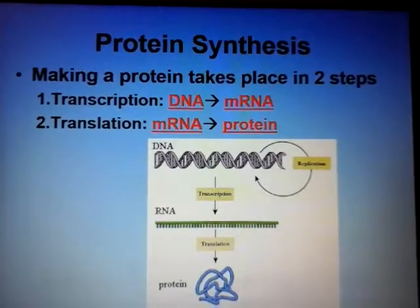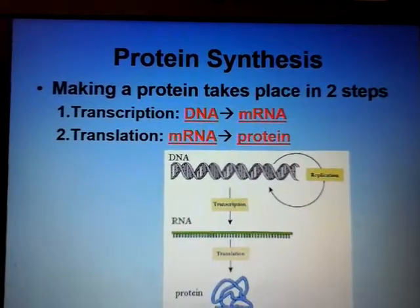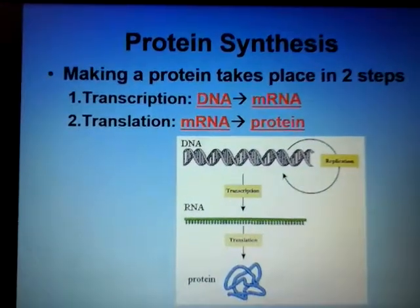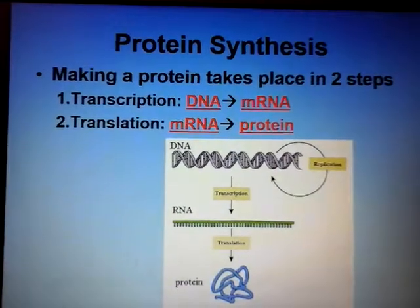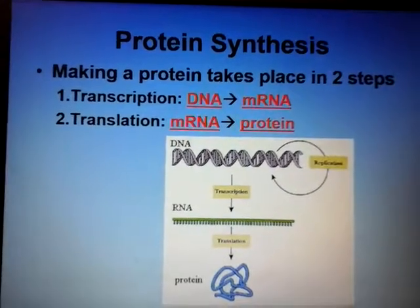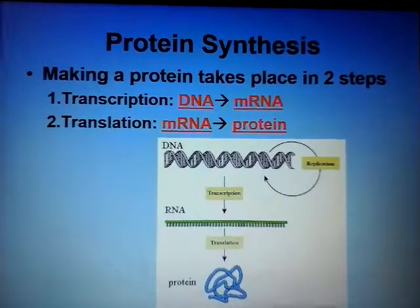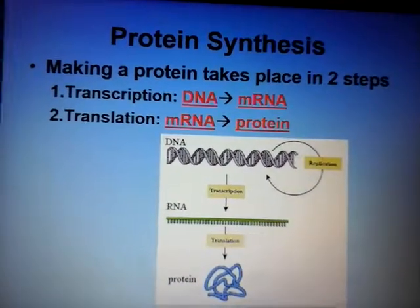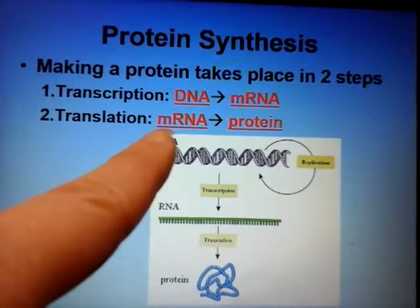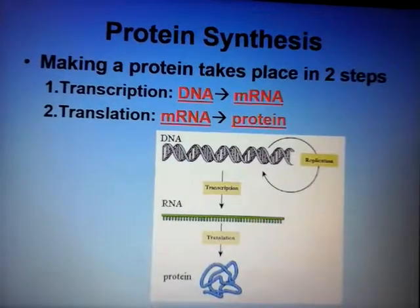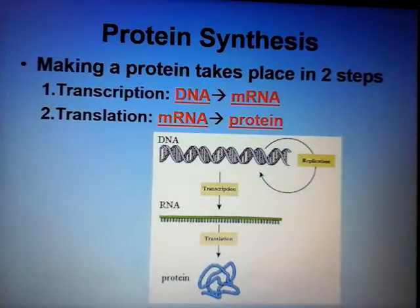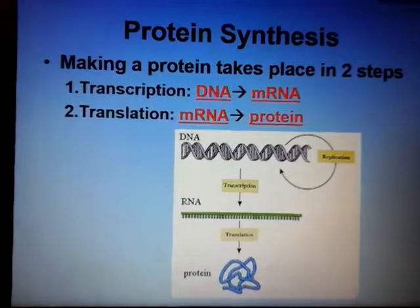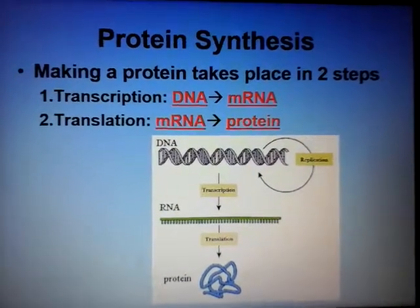Protein synthesis is when you make a protein, and it has two parts: transcription and translation. Transcription is when your body takes DNA and uses it to make RNA — all RNA is made this way. Translation is when you take that RNA and use it to make a protein. Transcription happens in the nucleus; translation happens at the ribosome.